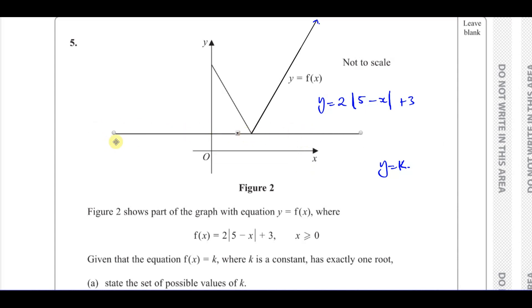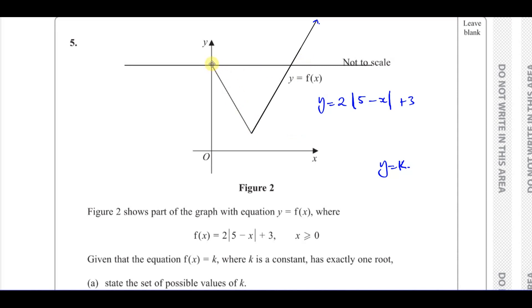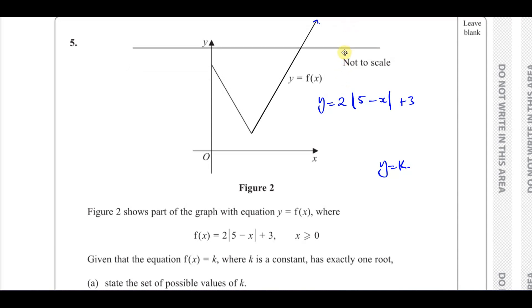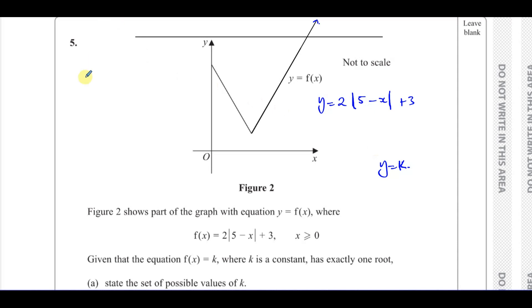There will be two roots all the way down where f(x) equals k, because they will intersect in two places. Until you reach the vertex — at the vertex itself, there's going to be one root, and below that there will be no roots because they don't intersect at all. So the y-coordinate of the vertex will be one value of k, and the other values of k will be from above the y-intercept of this curve. So from the vertex up to the y-intercept there will be more than one solution; the vertex itself will have exactly one solution.